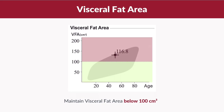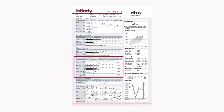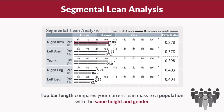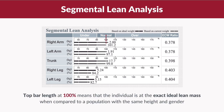Therefore, it is recommended to maintain your visceral fat area below 100 centimeters squared. Now let's talk about the segmental lean analysis, which shows how your lean body mass is distributed in your body and also evaluates your left and right muscle balance. The top bar shows your lean mass in kilograms and compares your current lean mass to a population with the same height and gender. If the top bar length is at 100, it means the individual is at the exact ideal lean mass.